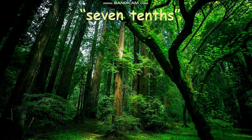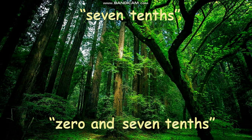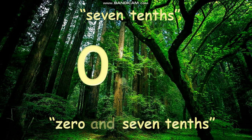The next example is 7 tenths, or we can read it as 0 and 7 tenths to make it easier to write in symbol. Write 0 as a whole number, then "and" as the decimal point, and 7. Tenths has only one decimal place. Therefore, our answer 0.7 is correct.